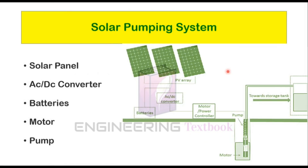This is the constructional view of the solar pumping system. It consists of a solar panel. Solar panels are the key parts of the solar pumping system. The group of solar panels is called a photovoltaic array, or PV array. Solar panels generate electric energy by separating electrons from atoms by permitting protons and light, which creates electricity, as we learned in the previous videos.